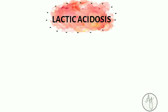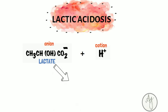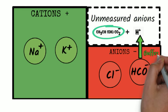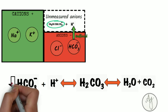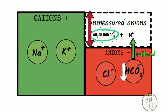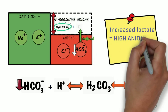Taking lactic acidosis as an example: in solution it exists as two entities — lactate (the anion component) and H+ ion (the cation component). Lactate is not accounted for in the anion gap calculation, so it belongs to the unmeasured anions. In lactic acidosis, the H+ component is buffered by bicarbonate, decreasing serum bicarb. The serum remains electroneutral because increased lactate accounts for the anion component, but since lactate is unmeasured, this appears as a high anion gap.